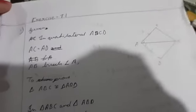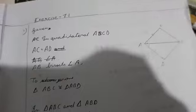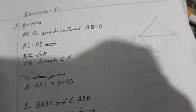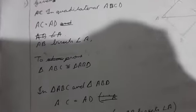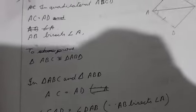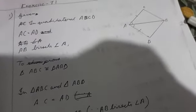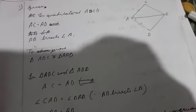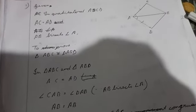Let's write down what is given. In a quadrilateral ABCD, AC is equal to AD, and AB is bisecting angle A. We have to prove that triangle ABC is congruent to triangle ABD. Since AB bisects angle A, it divides the whole angle A into two equal parts, so angle CAB is equal to angle DAB.